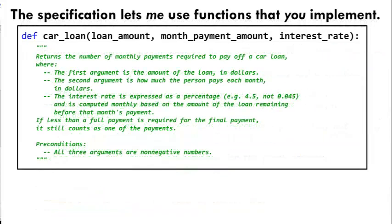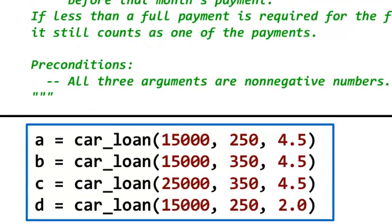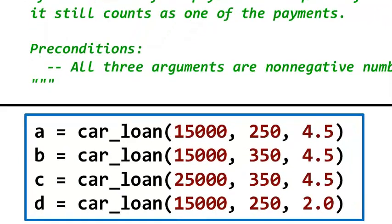If we both agree on the specification, and you write the function per the specification, then I can use your function without knowing its insides by calling your function, as in these examples that I might use to help someone understand the effects of higher monthly payments or a more expensive car.